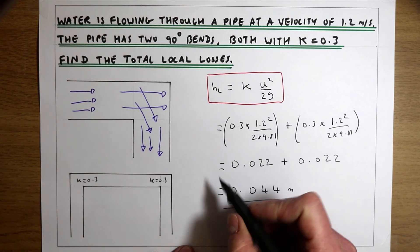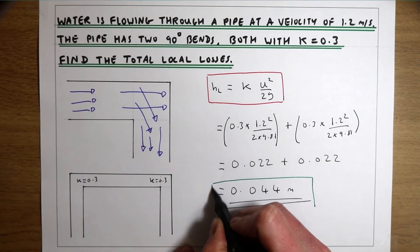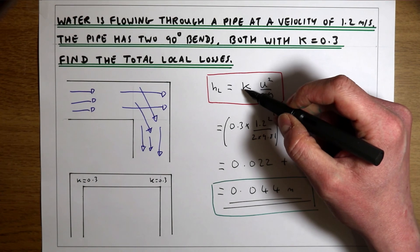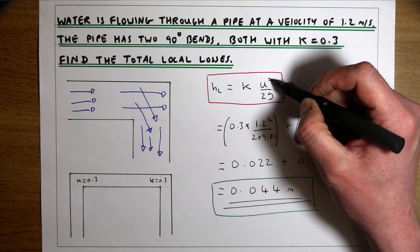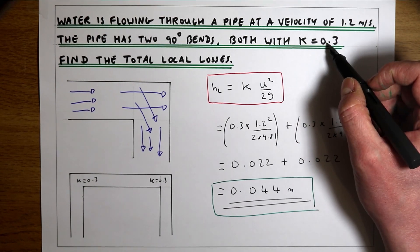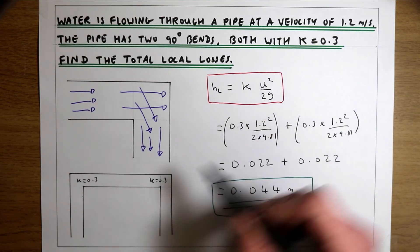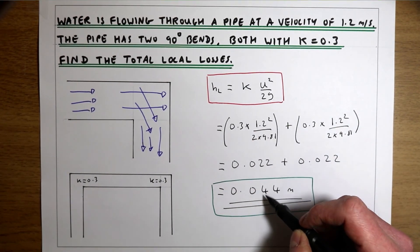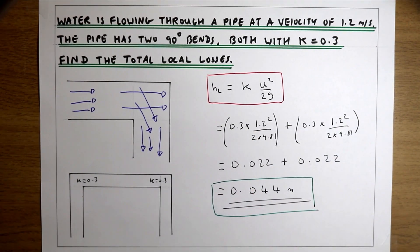So what we've done is we've taken the equation for local losses, which is a local loss coefficient times by our velocity squared over 2g. We were given the velocity in the equation, we were given the local loss coefficient, so we can work that out for both bends, and the sum of those two losses gives us the total loss due to those two bends in the pipe.